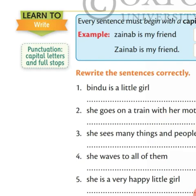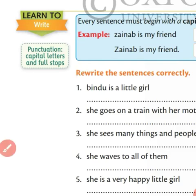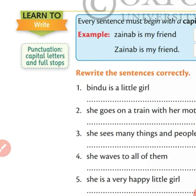How are you, students? Hope you are well. In the last video, we understood about punctuation. What is punctuation? Punctuation is a system of symbols used to divide or clarify text, such as exclamation mark, comma, full stop, and question mark. These are all symbols used to clarify or divide the text.